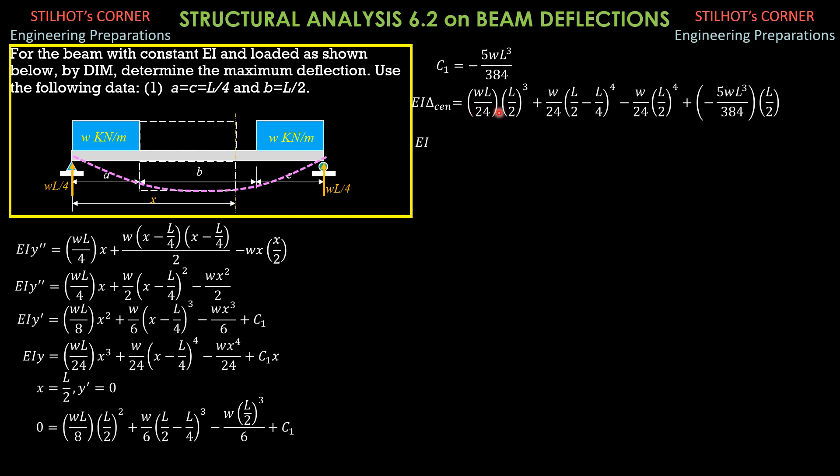So simplifying first, the first term is WL to the fourth over 192, the second term is WL to the fourth over 6144, the third term is negative WL to the fourth over 384, and the last term is negative 5 WL to the fourth over 768. Then combining using your calculator, the deflection at the center can now be found, and it is equal to negative 23 WL to the fourth over 6144 EI.